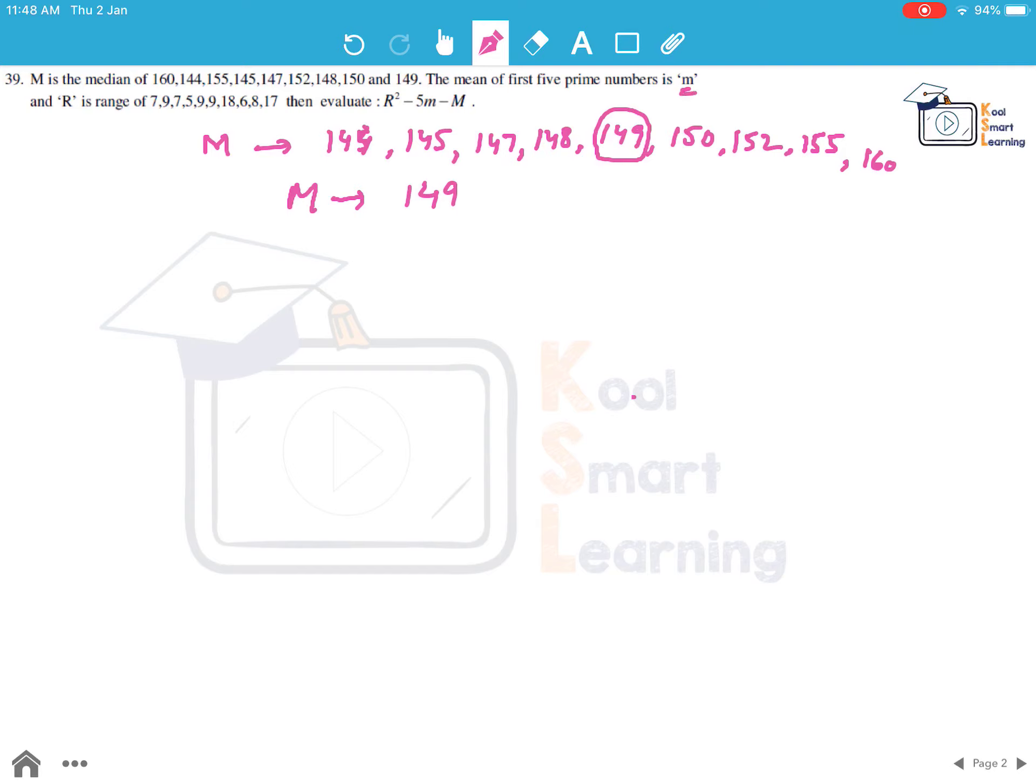Now small m is the mean of the first 5 prime numbers. So this will be equal to 2, 3, 5, 7, and 11 divided by 5 which comes out to be 28 by 5 which is 5.6. So this is the value of small m.